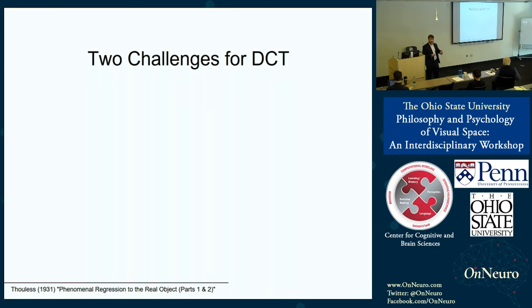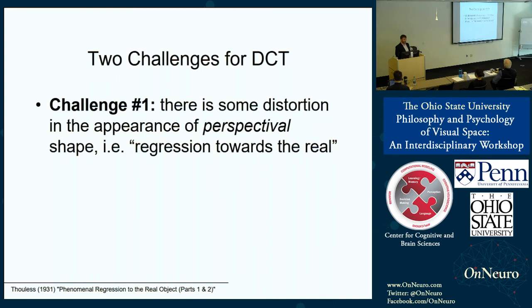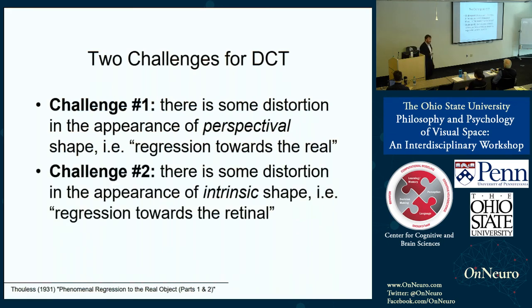Just to be clear, we actually think these are not fatal challenges to the dual content theory, but rather to certain simple versions proposed by, for example, Alva Noë. One challenge is that there's some distortion in the appearance of perspectival shape — some mismatch between appearance and reality with respect to perspectival shape. More specifically, we think there's some regression towards the real: we tend to overestimate the perspectival shape, thinking it's closer to the real shape than it really is. These phrases about regression are taken from Thouless and Brunswick, classic experimental psychologists of the 1930s.